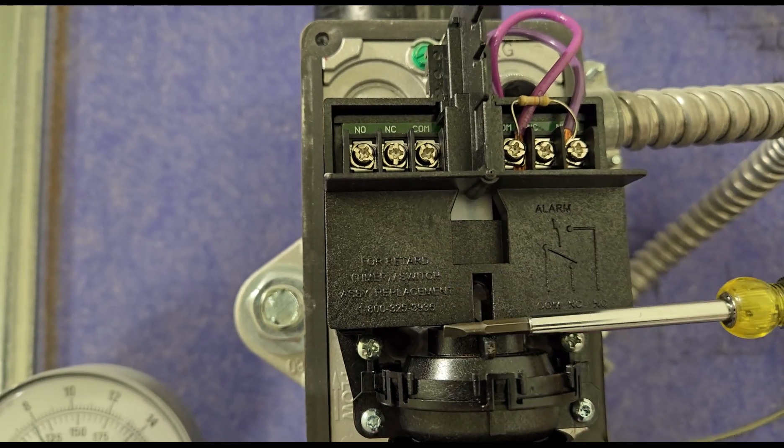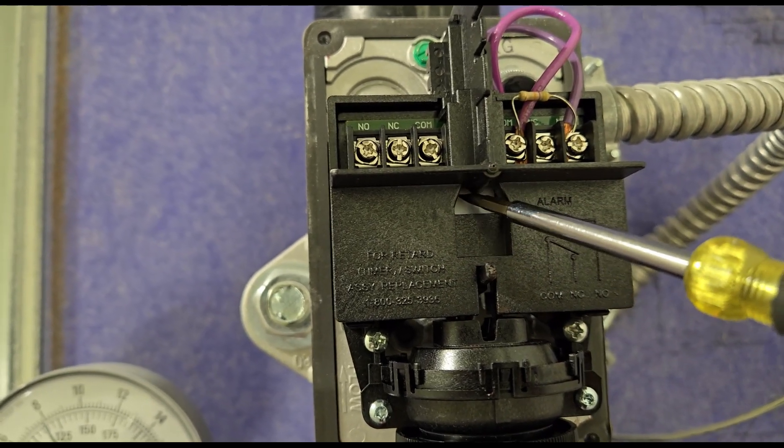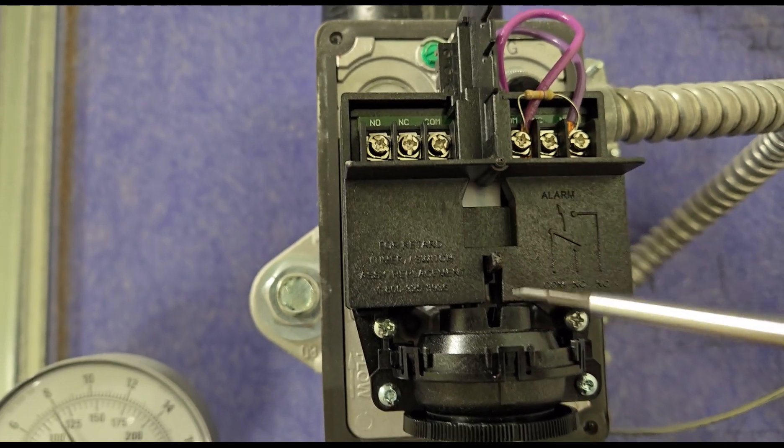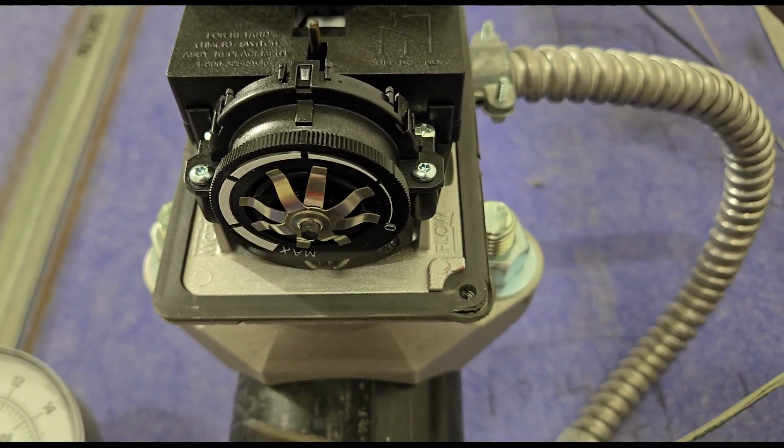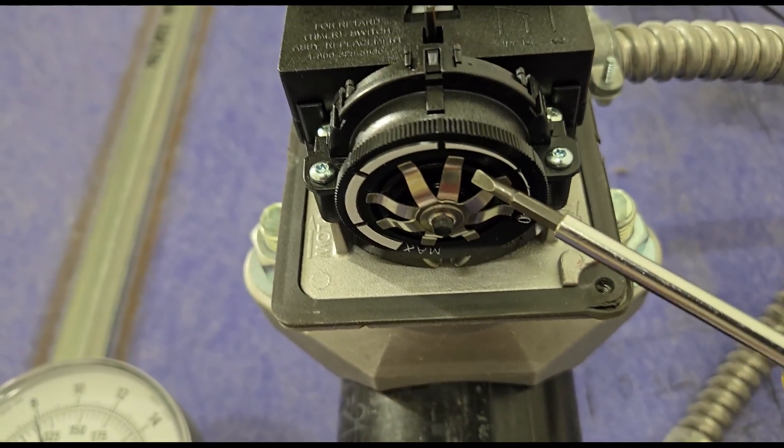After the timer starts and this goes down, this will drop after a set time. And when that drops, that's when the flow switch activates. And on the bottom, we have our timer, which we can adjust.